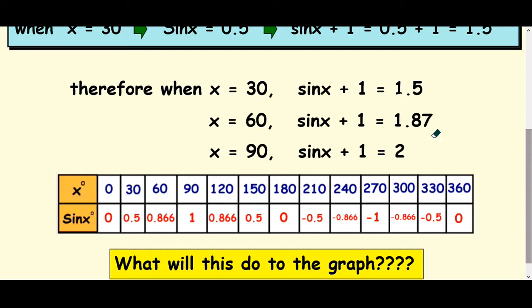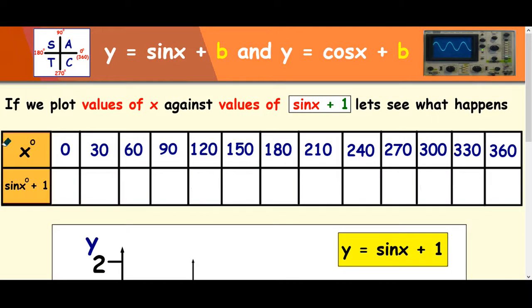So if you're thinking about what happens to the graph, maybe some of you can imagine that right now. We'll draw it out. So we'll plot values of x against sin x plus 1. Copy this table out, then type sin 0 into your calculator, add 1; sin 30, add 1, and so on.